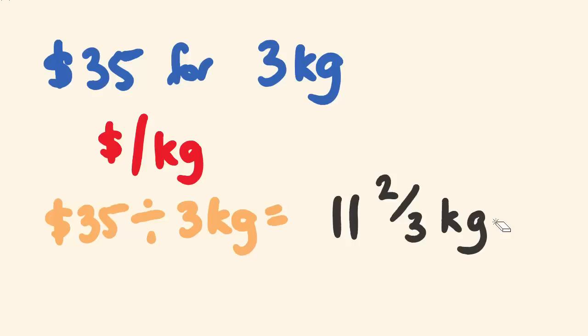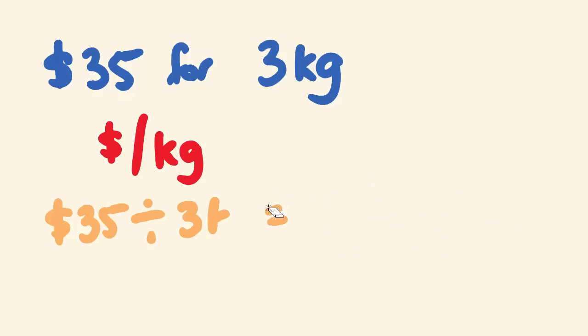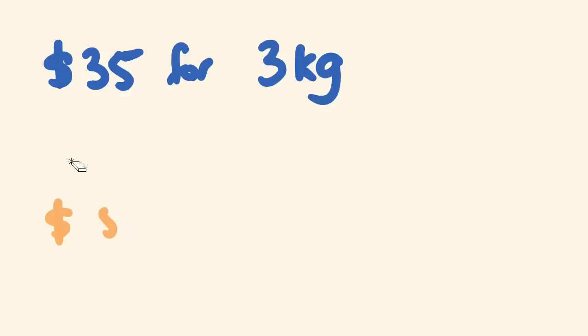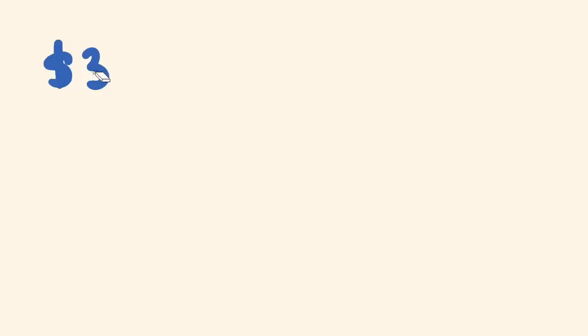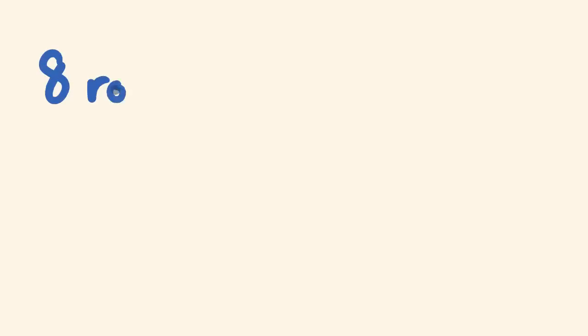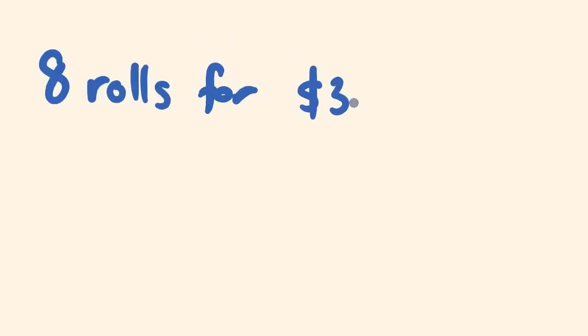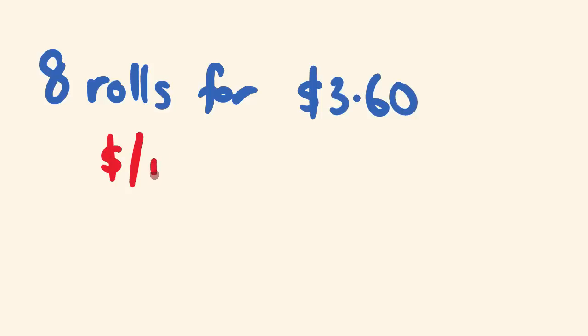Now I'm going to get into some variations of these. They're not harder because you just follow that formula, so they're not harder at all. Just remember: follow the formula. Another example might be where you were told you bought 8 rolls for $3.60, and you were asked what is the price — the dollars per roll.